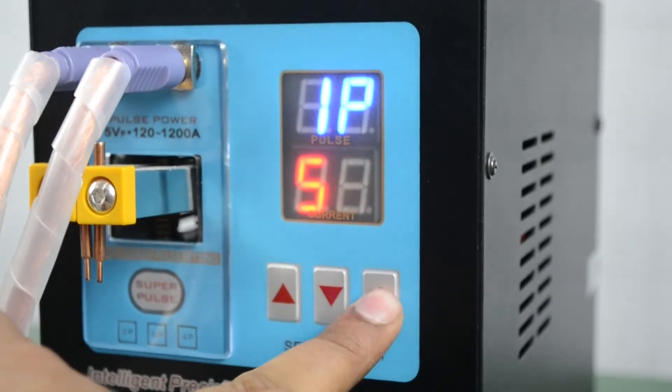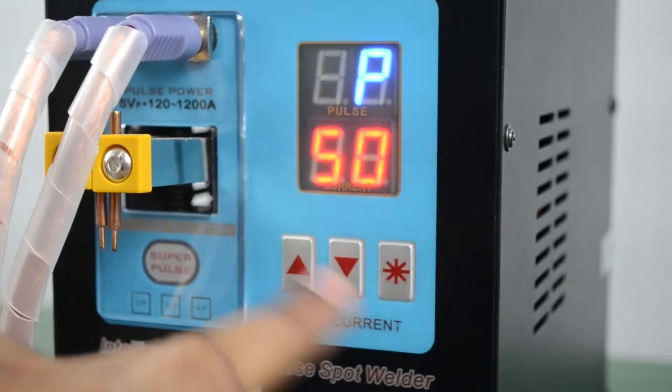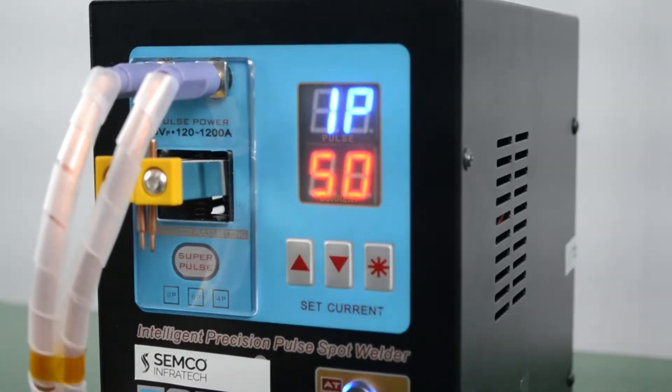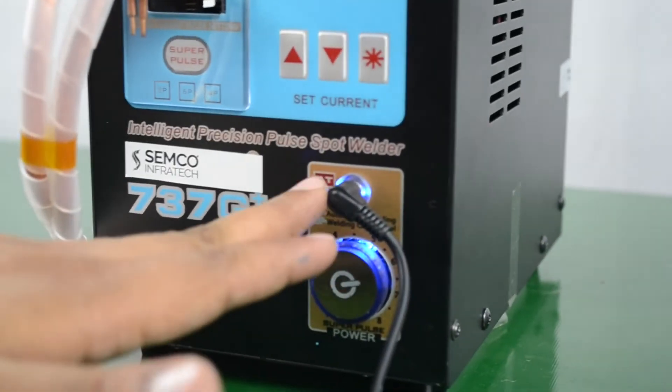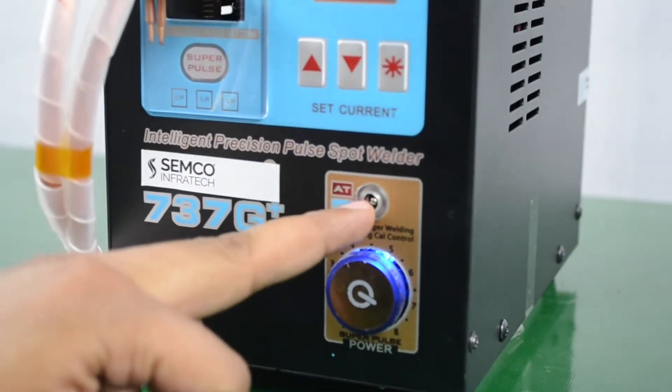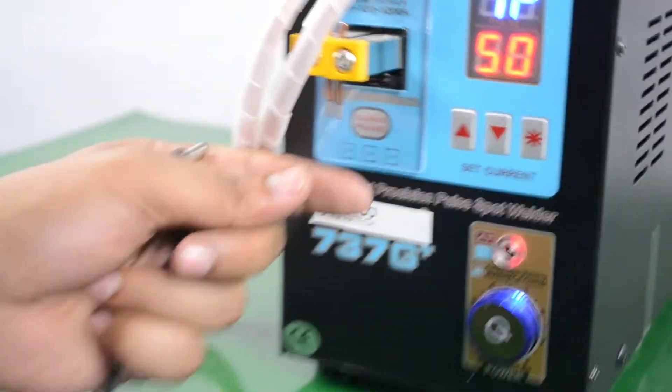We can change this pulse like 2P or 1P. Currently I am using 1P for my type of nickel and battery. We have two options - if we connect this pedal, it will work in automatic mode. If you disconnect it, the light changes from blue to red, indicating manual mode, which means we have to push down to weld.